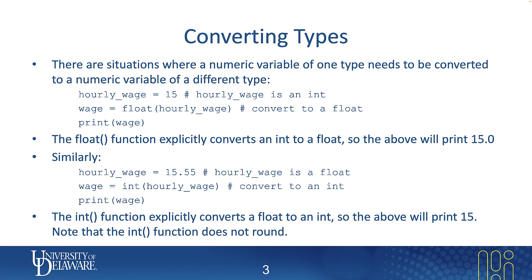In the next example, if hourly_wage is explicitly assigned a floating point value like 15.55, we could still convert it to an integer. Now wage has an int type. In this case, Python does not round 15.55 — it actually truncates. So when it prints, it will print 15, not 16. The int() function only takes the integer portion of the number, not the decimal part.